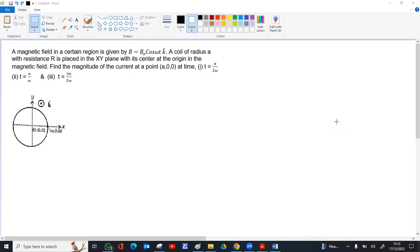Here a magnetic field is given as B equal to B₀ cos ωt in k cap. K cap means out of the paper, out of the screen. A coil of radius A with resistance R is placed in the xy plane with its center at the origin in the magnetic field. Find magnitude of the current at point A at time t equal to π by 2ω, at time t equal to π by ω, and t equal to 3π by 2ω.